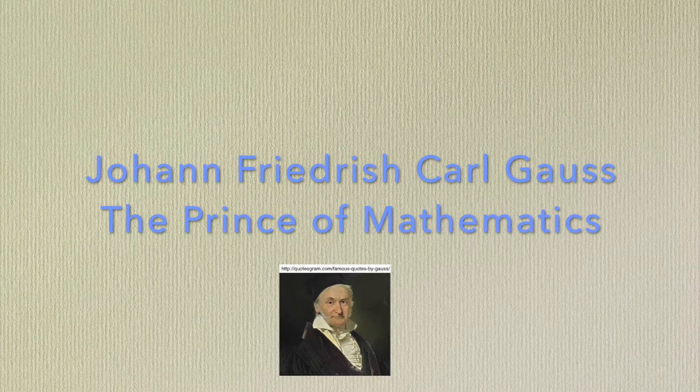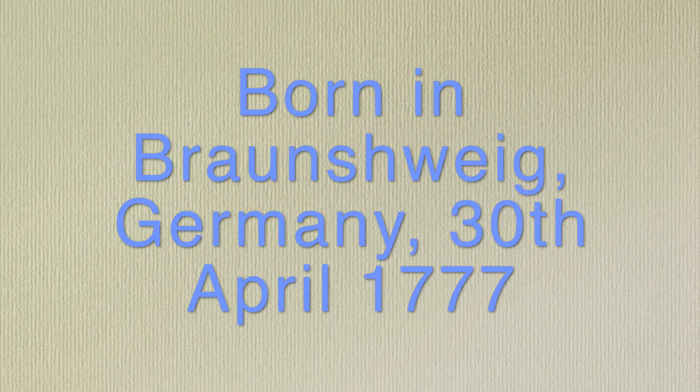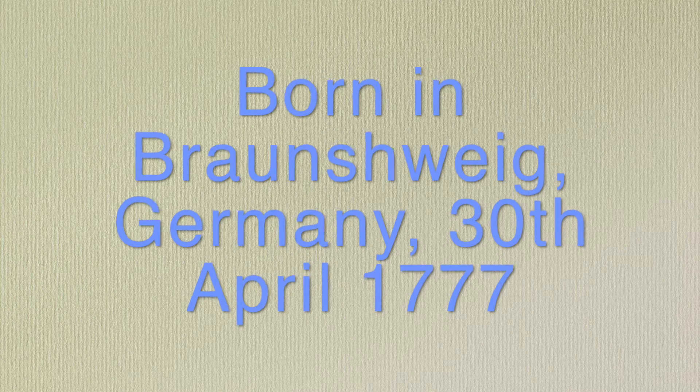Johann Friedrich Karl Gauss, the Prince of Mathematics. Johann was born in the town of Braunschweig, Germany on the 30th of April 1777.